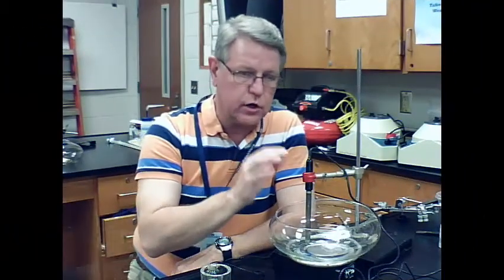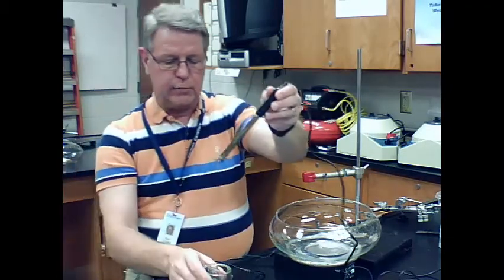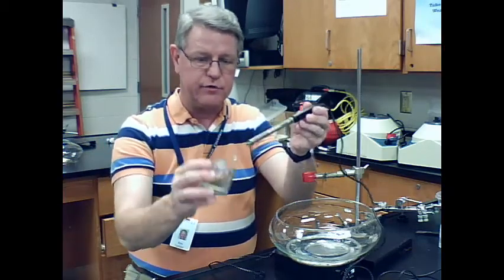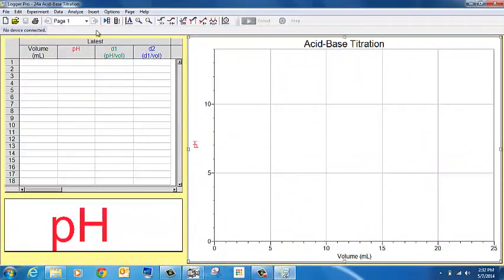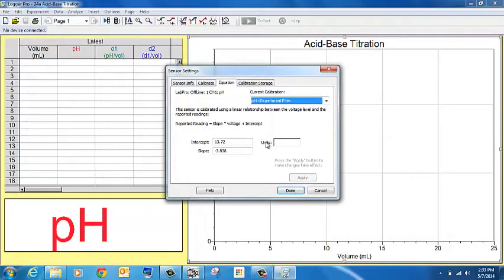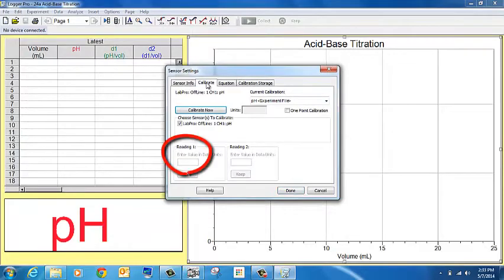Before I actually start collecting any data, I need to calibrate the pH probe. And so I need to take the pH probe, rinse it off carefully, and I'm going to insert the pH probe alternately into this pH 7 buffer solution. So to calibrate the pH meter, we're going to click Experiment, click Calibrate, then pH, and make sure your setting is on two-point calibration. So we will click on Calibrate now. We'll enter the buffer solution pH reading under Reading 1. Click Keep.